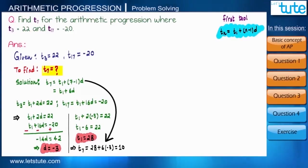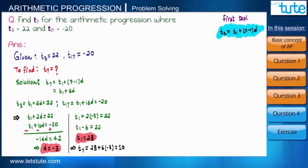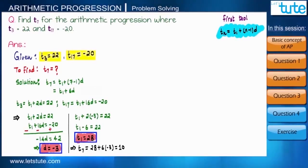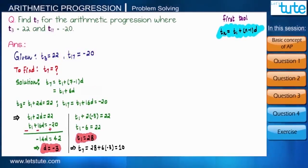By substituting t1 and d, we get t7 equals 10. So we learn that if any two terms of an arithmetic progression are given, we can find not only the first term t1 and the common difference d, but also any term of that particular arithmetic progression.